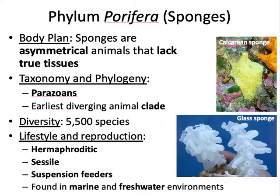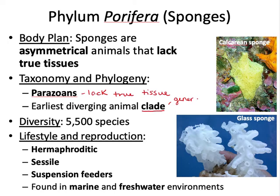According to the phylogenetic tree, Porifera are a lineage by themselves. We call them parazoans — the clade Parazoa refers to the fact that they lack true tissues, compared to Eumetazoa which have true tissues. That would be the higher-level phylogeny. They are the earliest diverging animal phylum. A clade is just a general term for a taxonomic lineage or phylogenetic group — so a phylum would be a clade.